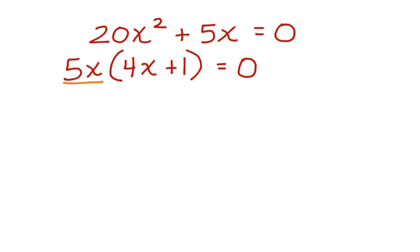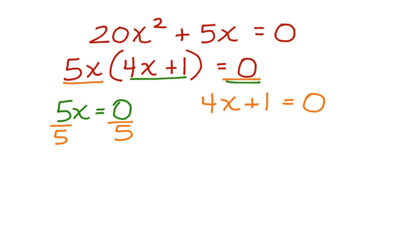Now, I can have two parts of my equation. I can have 5x equals 0, and I have 4x plus 1 equals 0. Working in this way, I can find solutions for this polynomial equation. Divide both sides here by 5. These cancel, and I have x is equal to 0.